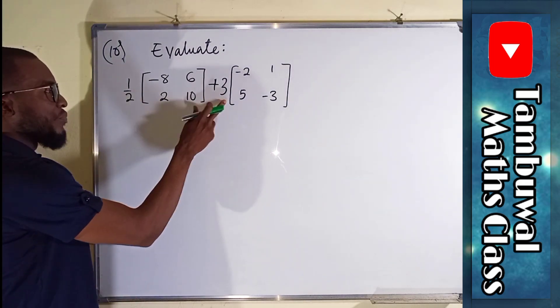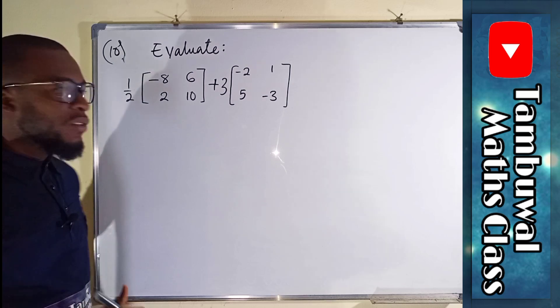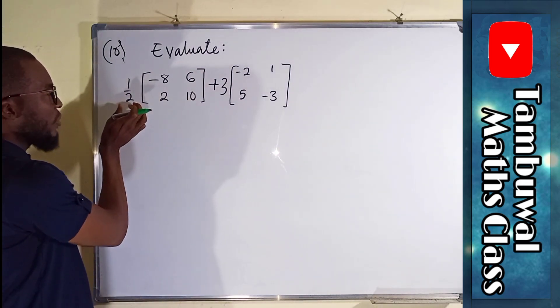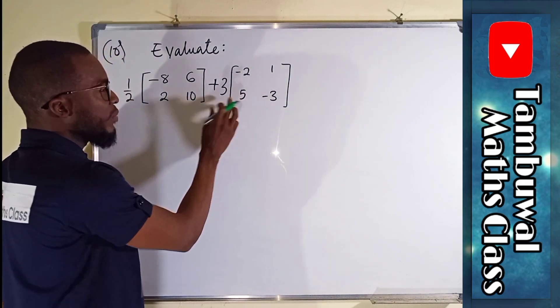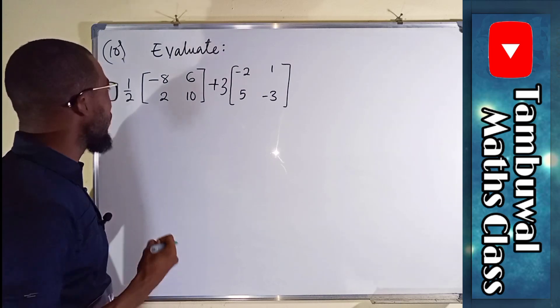So these scalars, they are going to affect each element in this matrix. So the first matrix here, we are asked to multiply it with half and the second matrix to be multiplied by 3. Then later on add the matrix together.